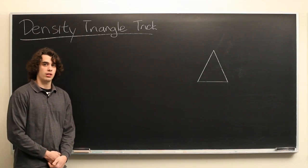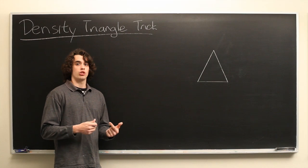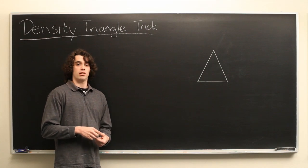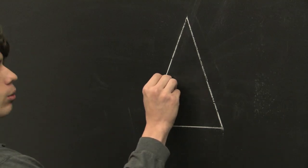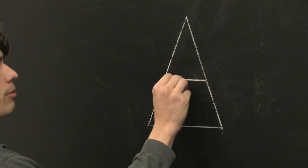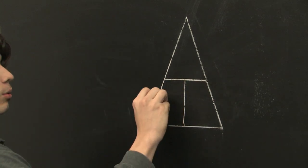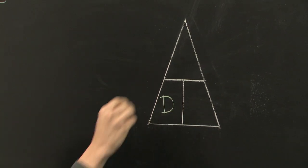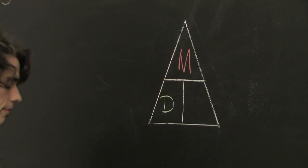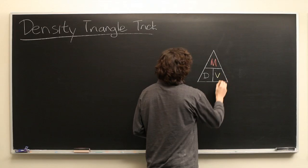The density triangle trick is a way to help you remember the relationship between density, mass, and volume. So we take a triangle, we're going to divide it into three parts — one on top and two on the bottom. We'll label this one D for density, we'll call the top part M for mass, and this bottom right part V for volume.